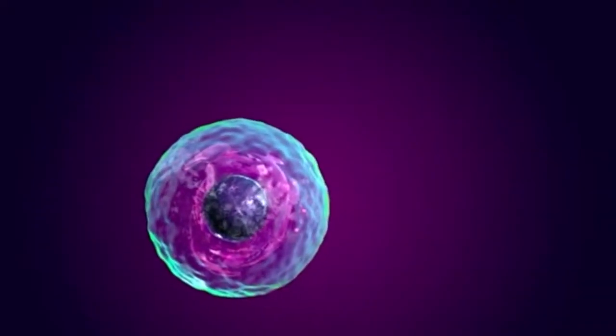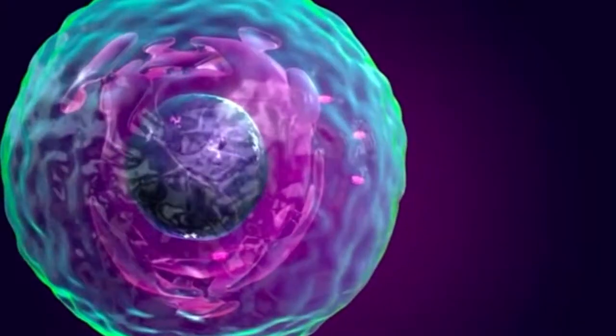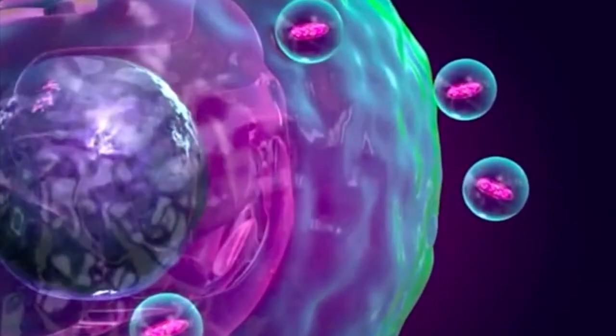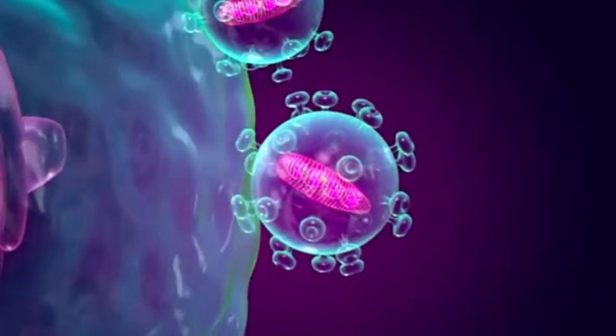Ribosomes can be found floating within the cytoplasm or attached to the endoplasmic reticulum. The endoplasmic reticulum serves many general functions, including the folding of protein molecules in sacs called cisternae and the transport of synthesized proteins in vesicles to the Golgi apparatus.